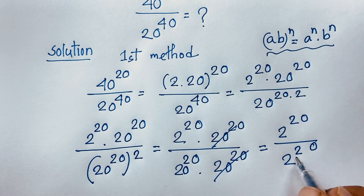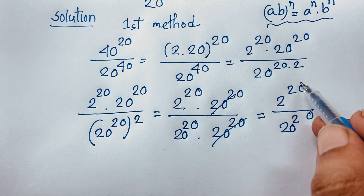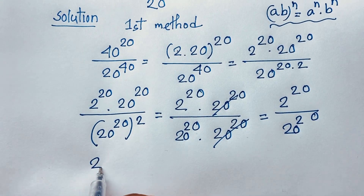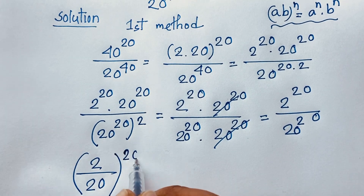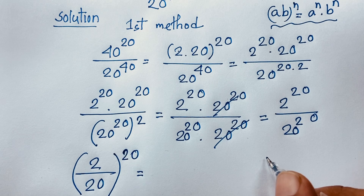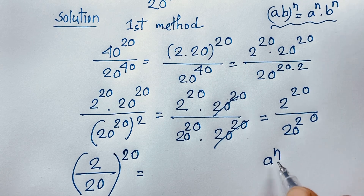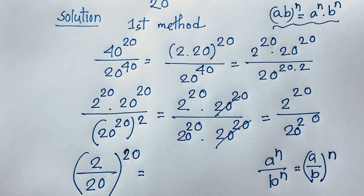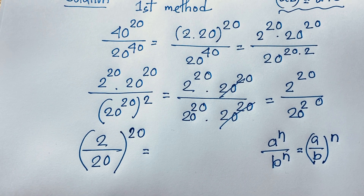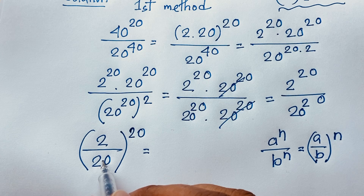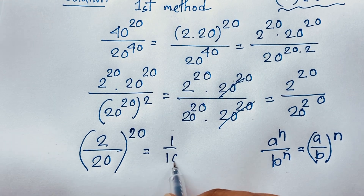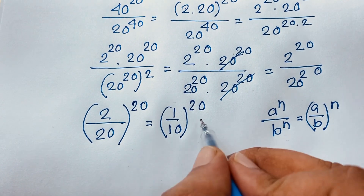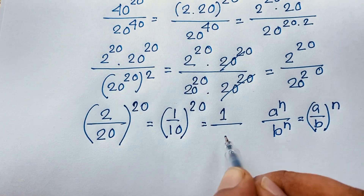Now I can see 2 to the power 20 over 20 power 20, so using the law a^n over b^n = (a/b)^n, it will be (2/20) whole to the power 20. Simplifying 2 over 20 gives 1 over 10, so it becomes (1/10) to the power 20, which equals 1 over 10 to the power 20.